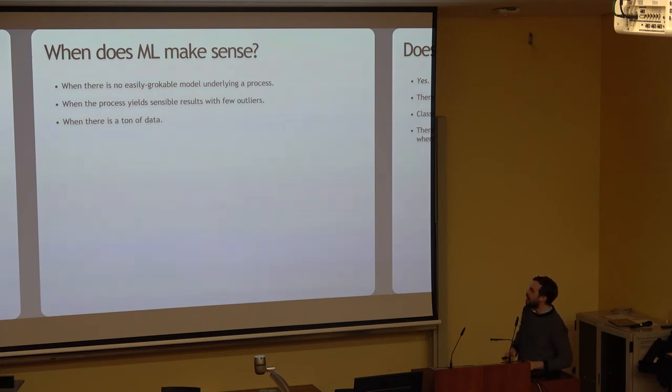So when does ML make sense? This is my personal totally subjective criteria. When there's no easily graspable model underlying the process. XOR we all kind of get how it works. Addition, we all kind of grok how it works. But if you can't say exactly what's going on succinctly and describe it to a three year old, let alone yourself, then machine learning is probably the candidate. Also, when the process yields sensible results with a few outliers. Machine learning is also excellent when the process yields totally nonsensical results, because if it's Gaussian noise, then that's the easiest thing to model in the world.